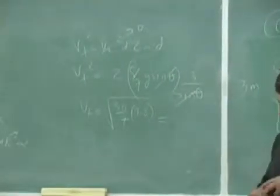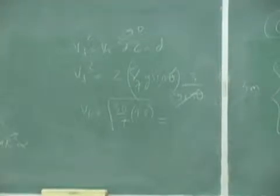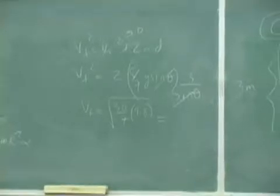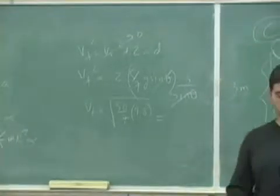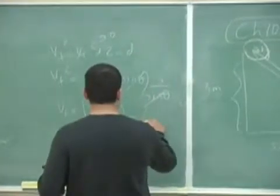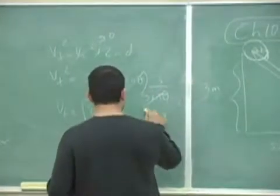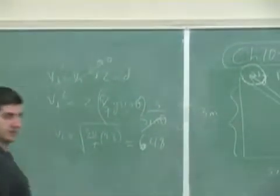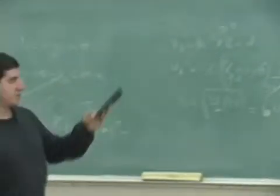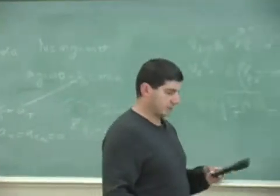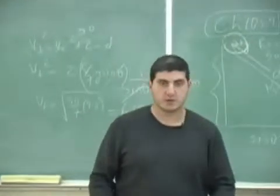Is that the same? 30 times 9.8 divided by 7, to the power 0.5 — 6.48. Awesome, 6.48. Same answer as we got using the energy approach.